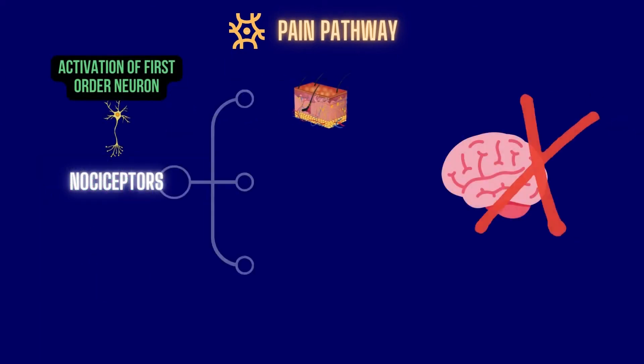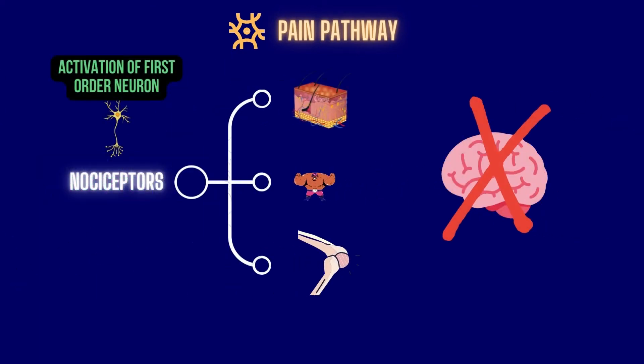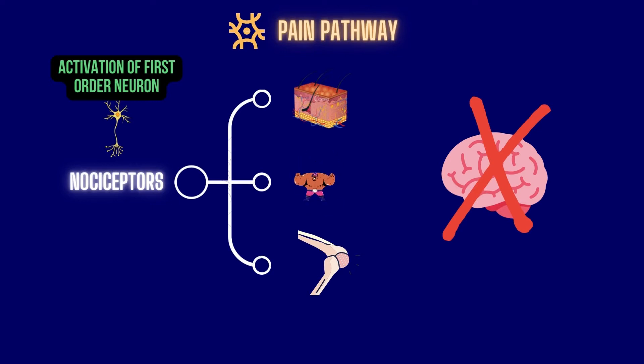Nociceptors can be found in the skin, muscle, joints, bone, and organs — other than the brain — and can fire in response to a number of different stimuli.